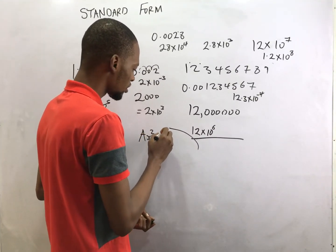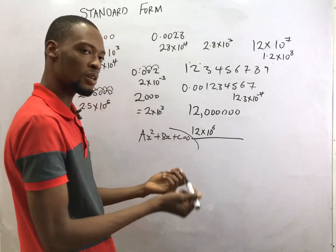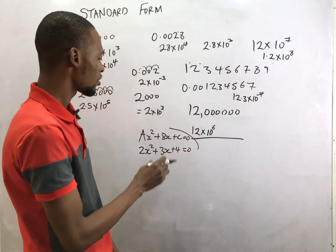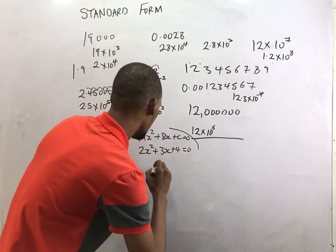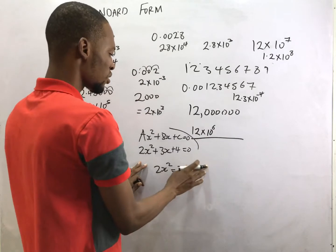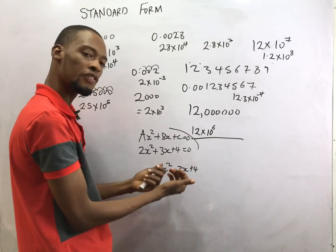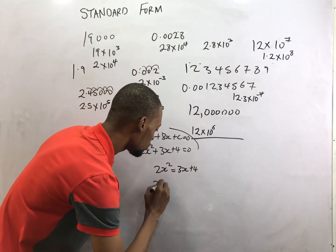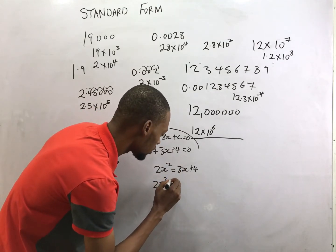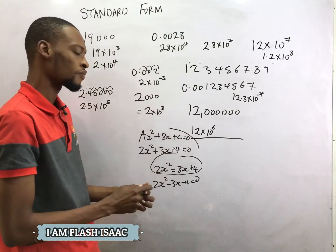For quadratic equations, the standard form is ax² + bx + c = 0, where a, b, and c are constants. For example: 2s² + 3s + 4 = 0. If you are given something like 2s² = 3s + 4 and asked to solve it, you know it's a quadratic equation but it's not in standard form. So we collect like terms: 2s² − 3s − 4 = 0. Now it is in the standard form of a quadratic equation.